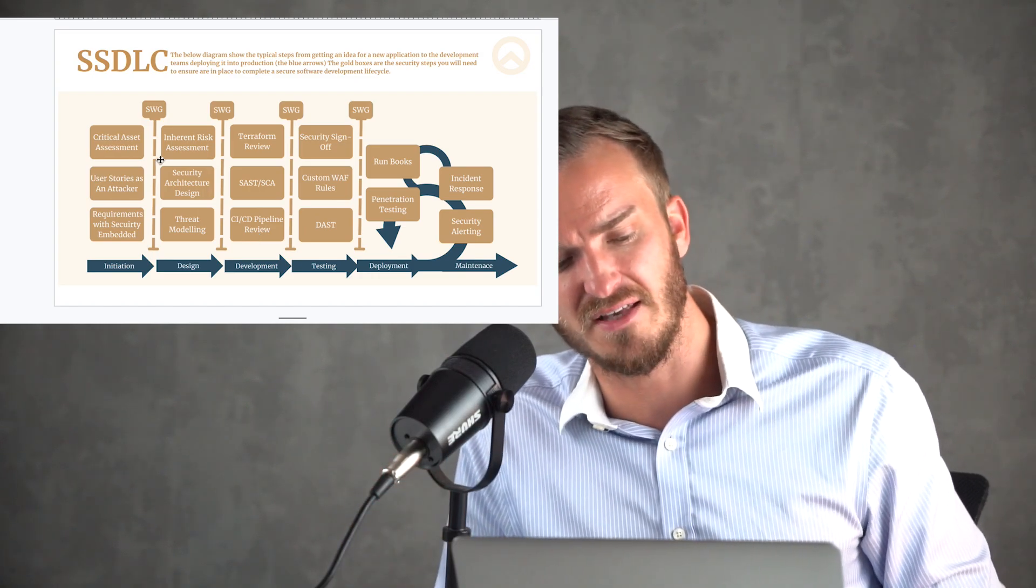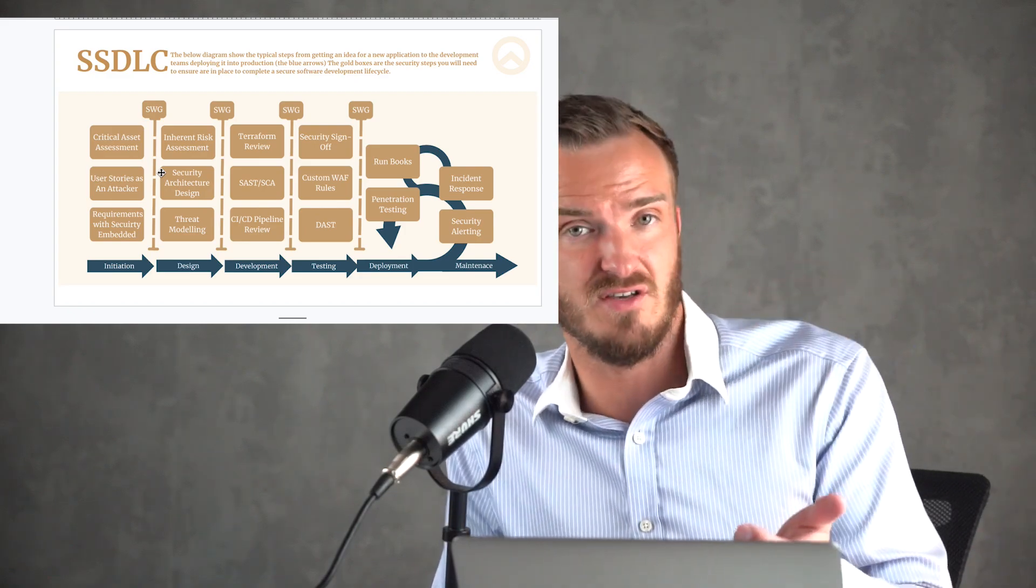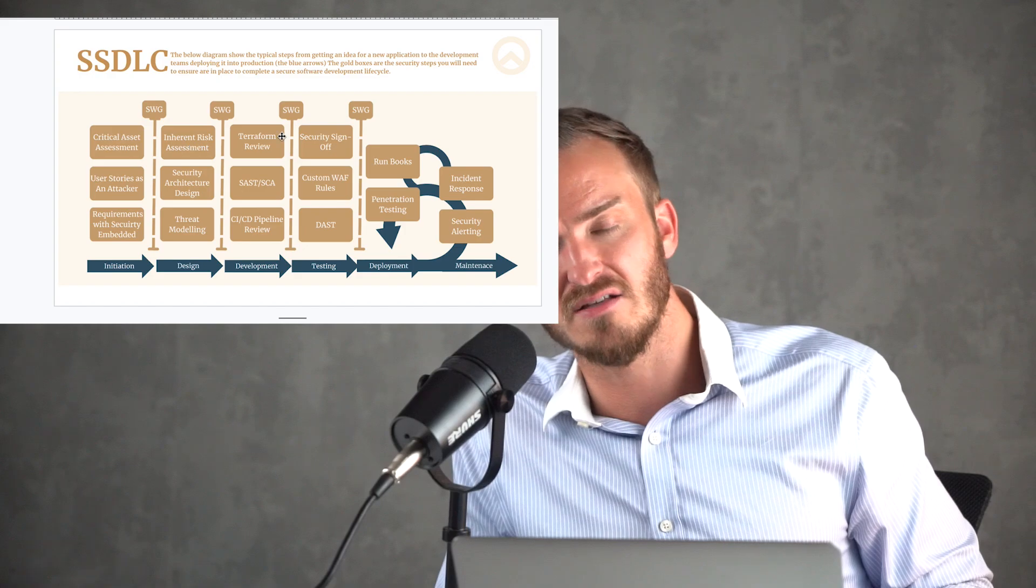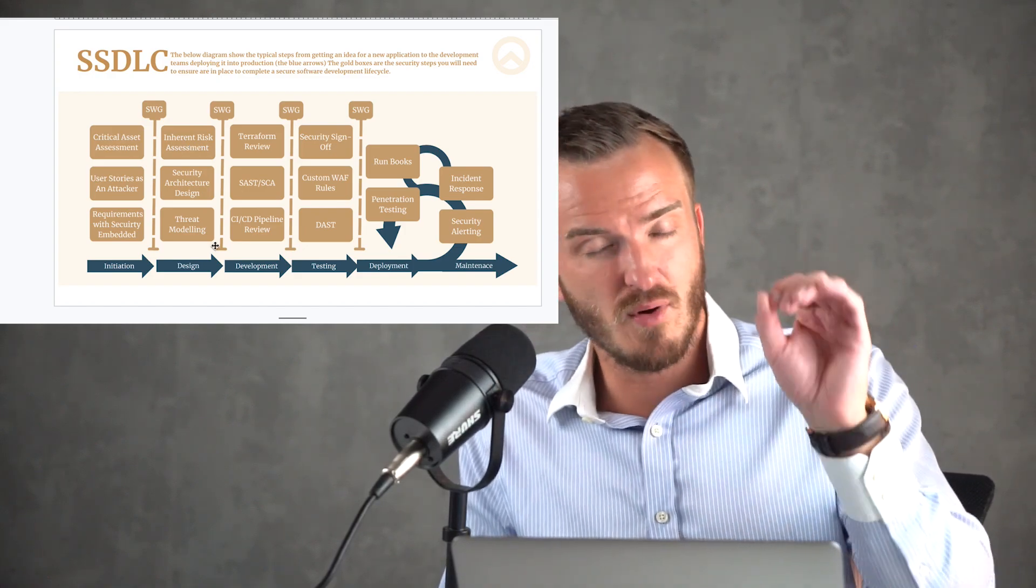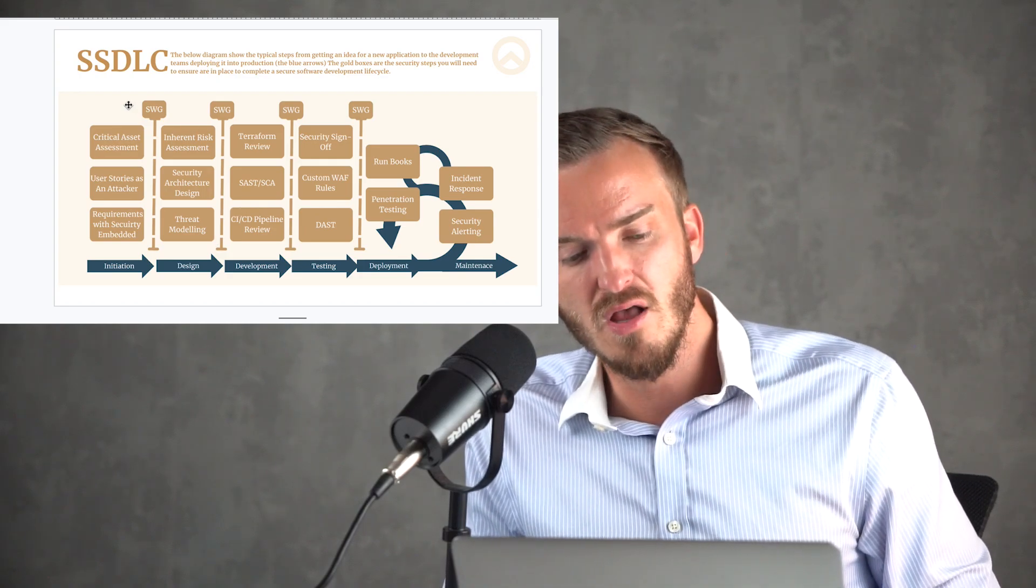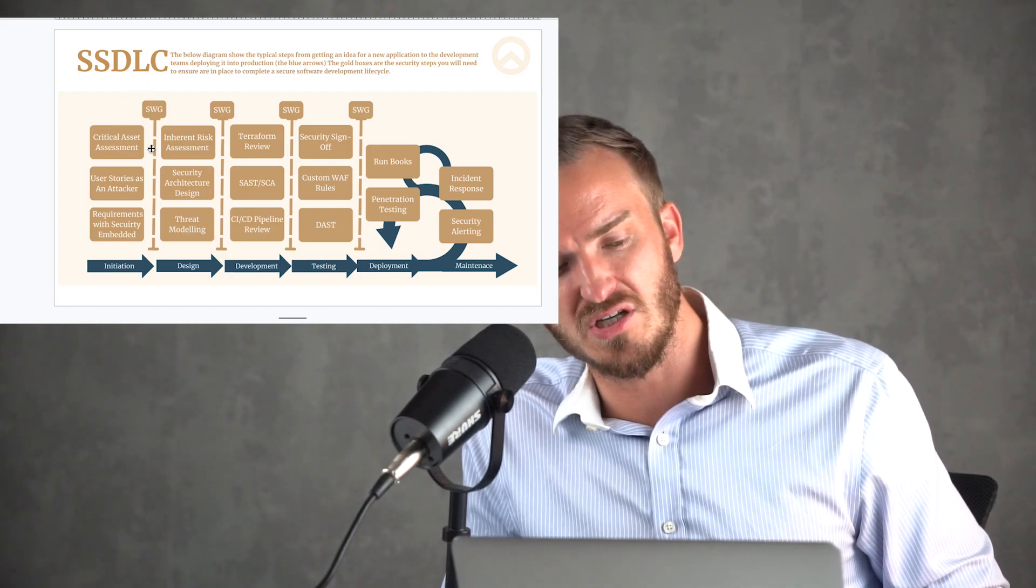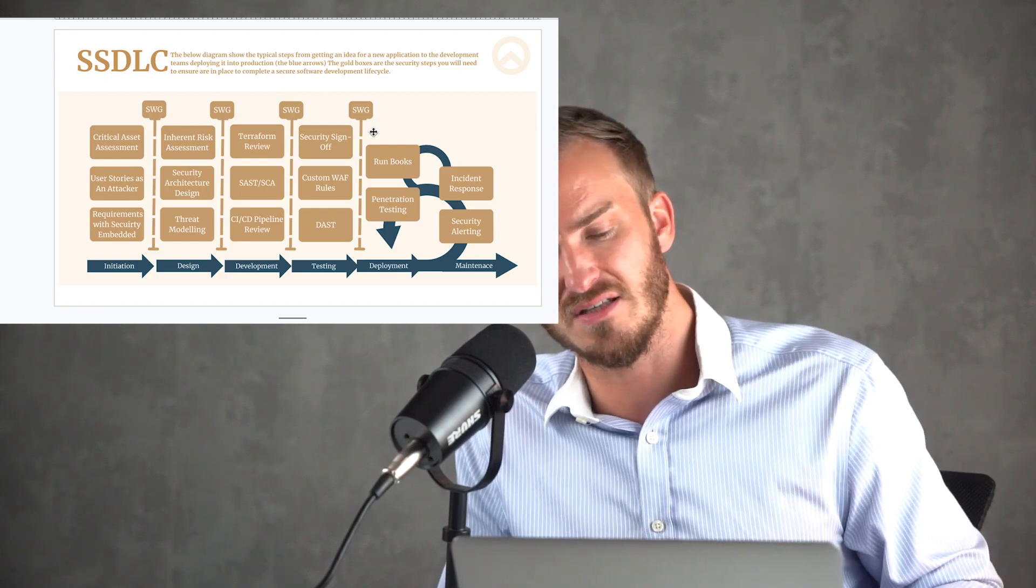Now in between each phase and before the team potentially moves into the next phase, if they're building a product for the first time, obviously we don't want to stop the team. So we want to automate as much of these processes as we can when iteratively building new code. But when we're first building the app for the very first time, and it's a big new platform, you might want to put in place SWGs, which stands for security working groups, which will just be sign-off meetings so that you're happy for them to go into the next phase.